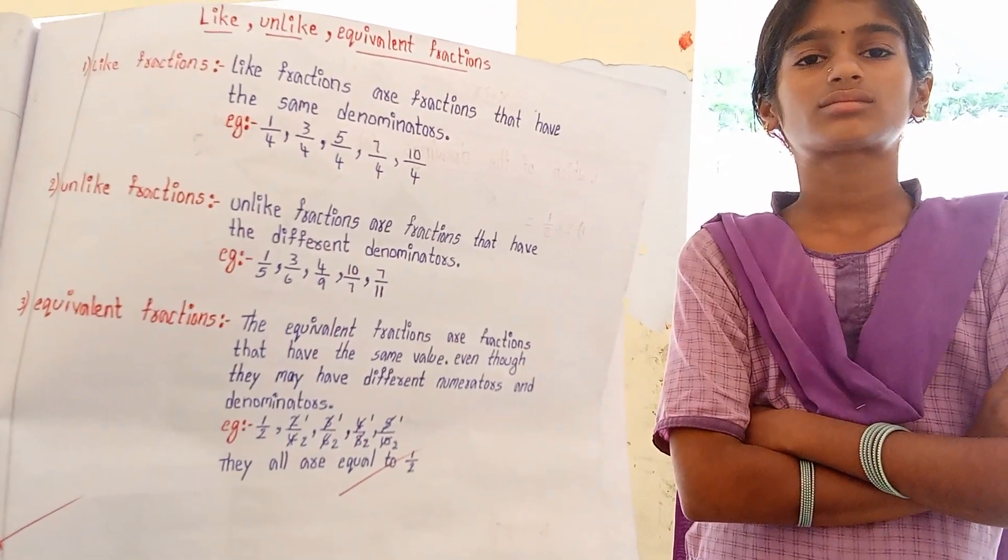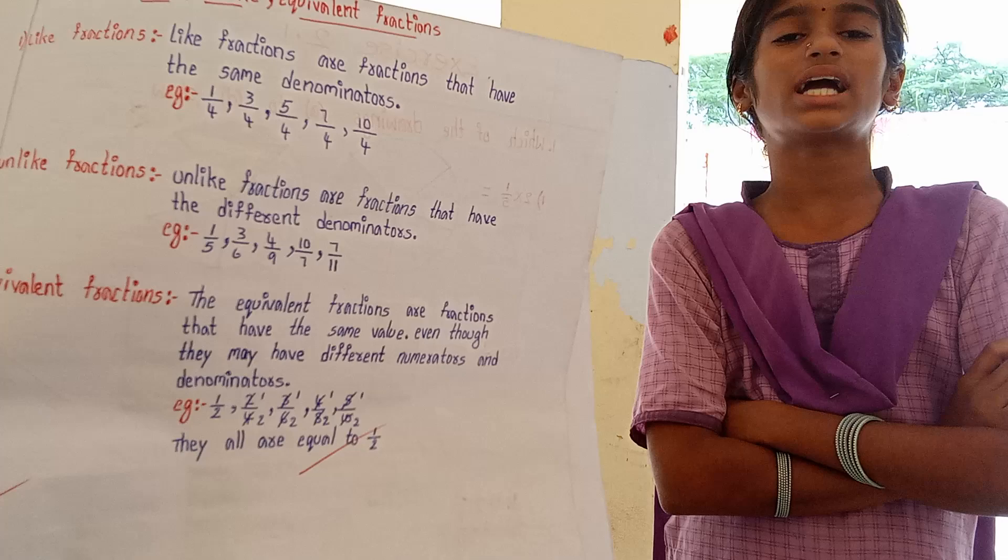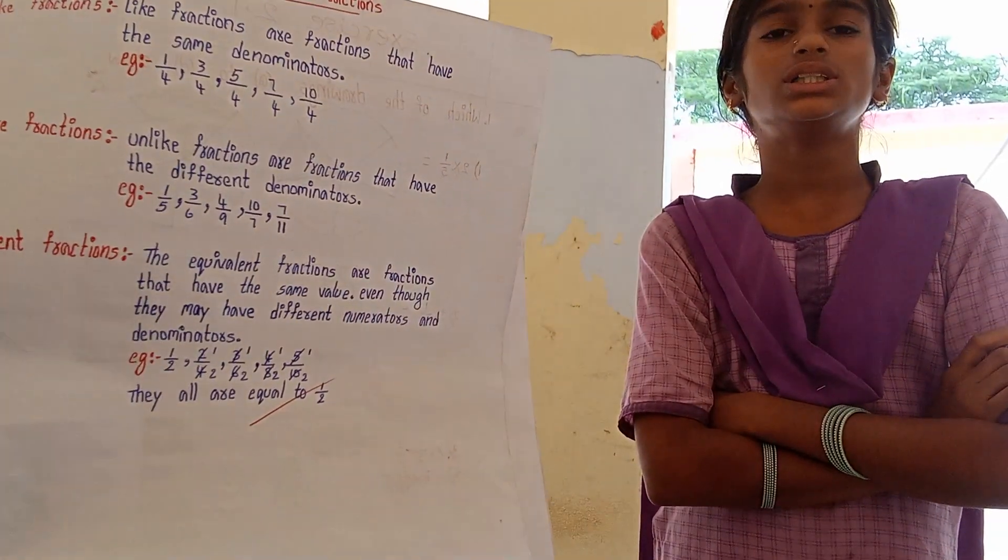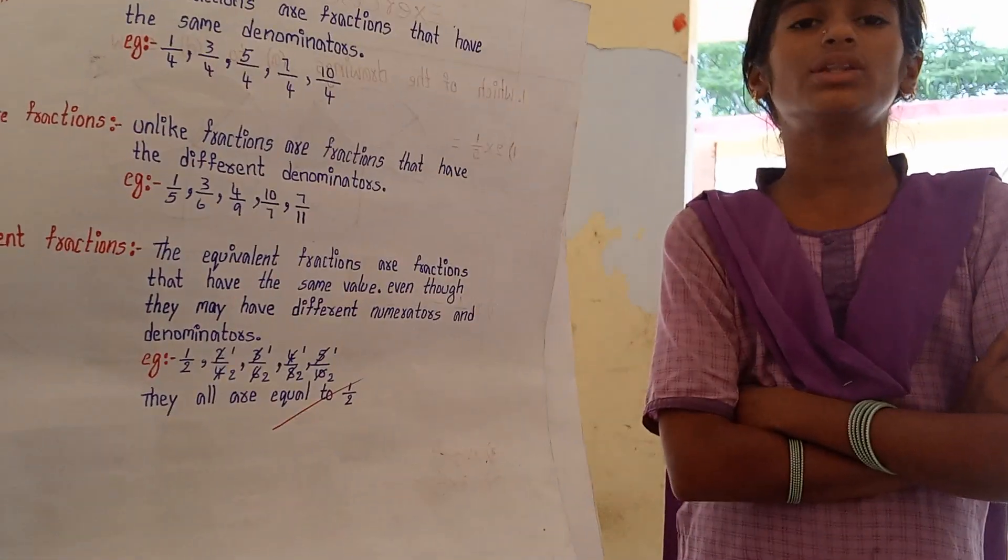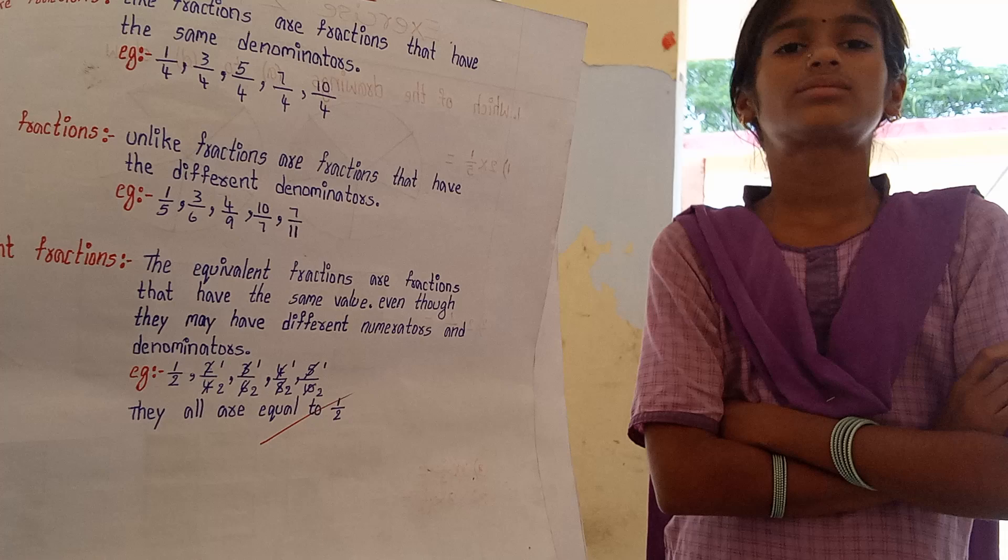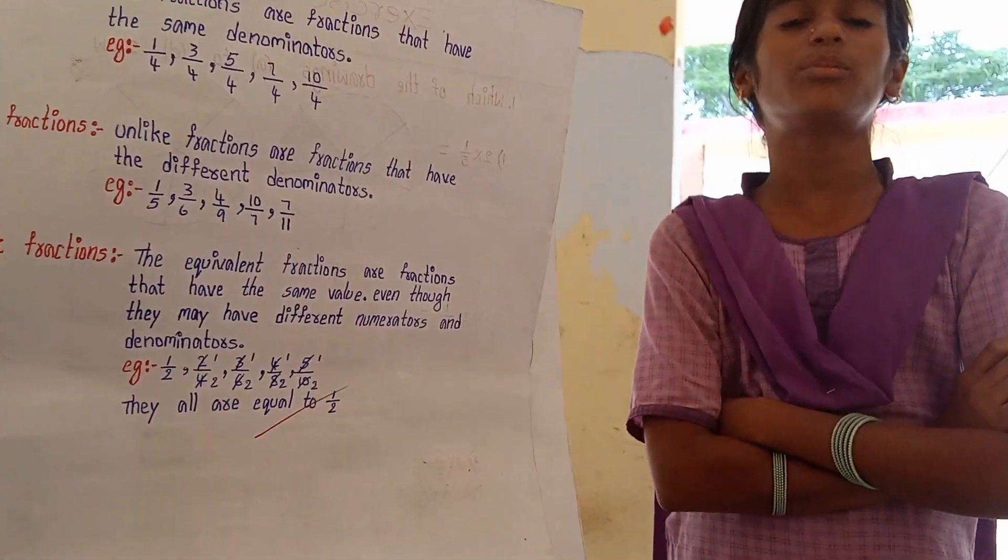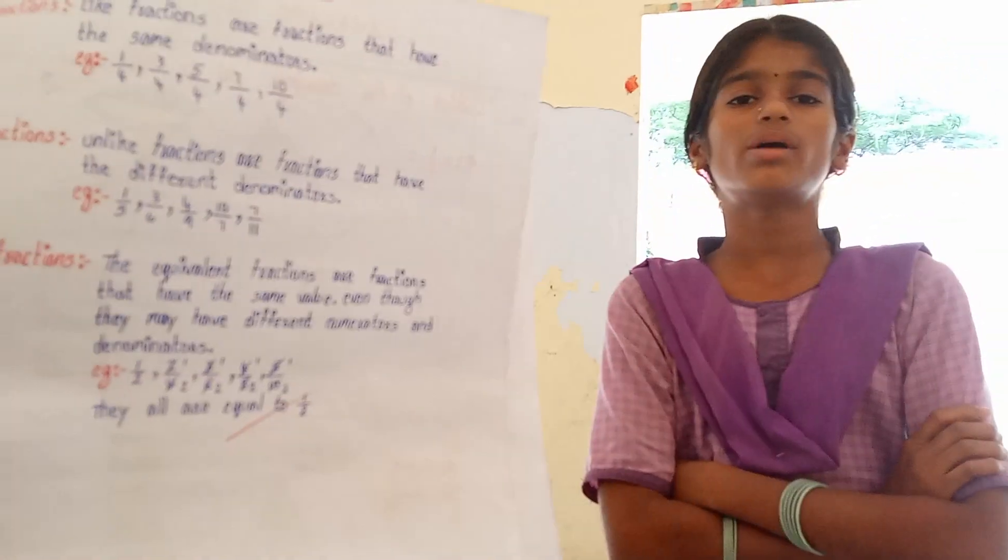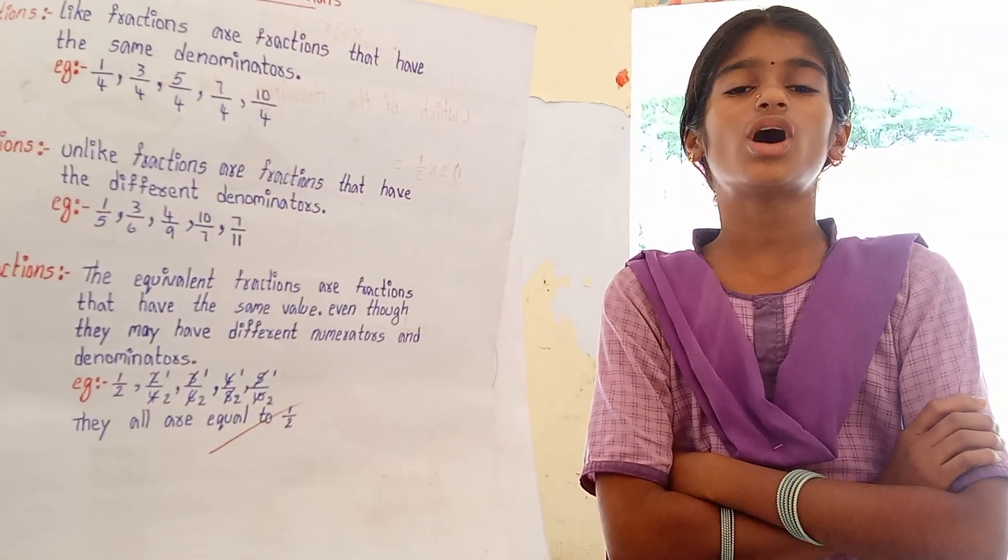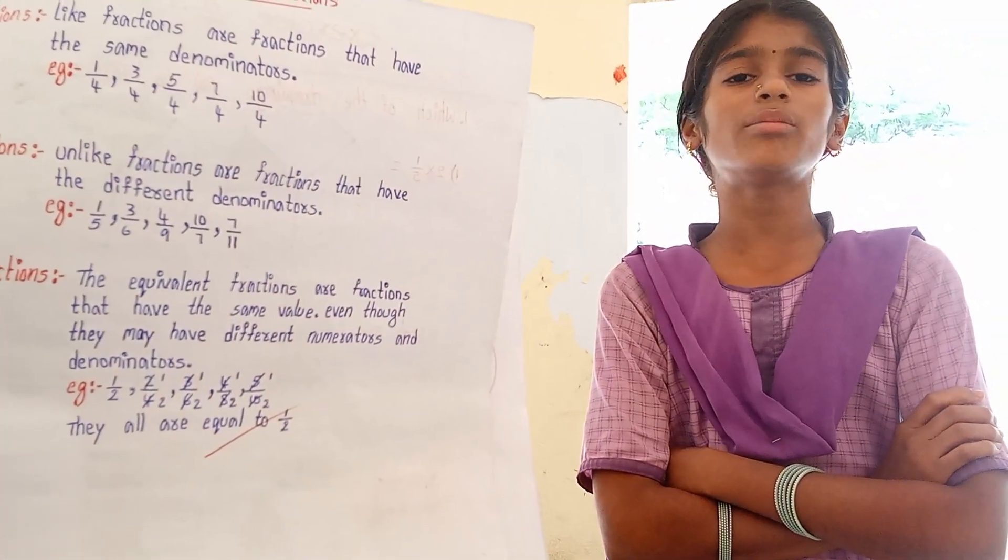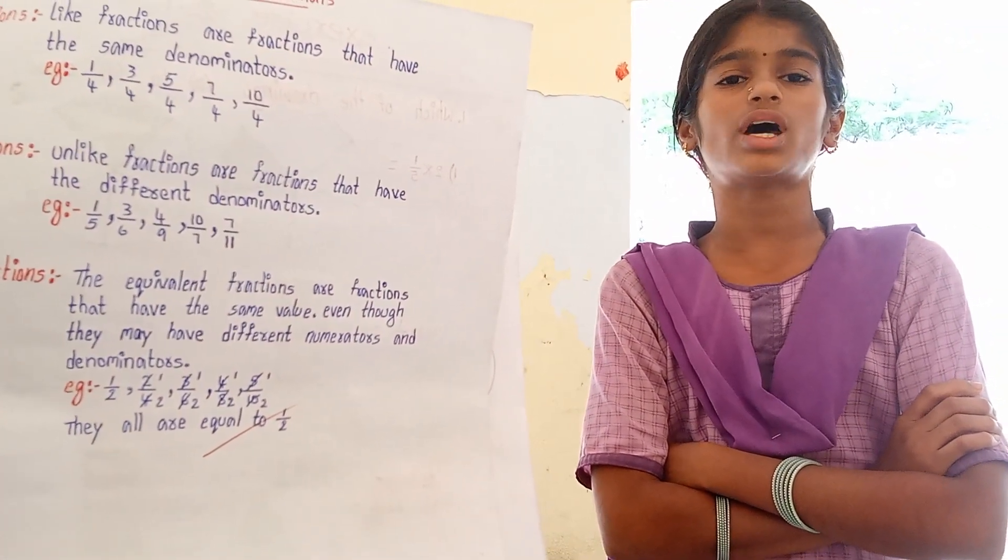Define equivalent fractions. Equivalent fractions are fractions that have the same value even though they may have different numerators and denominators. Example: 1/2, 2/4, 3/6, 4/8, 5/10. They are all equal to 1/2.